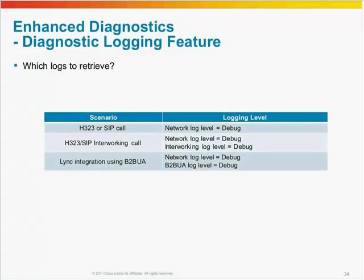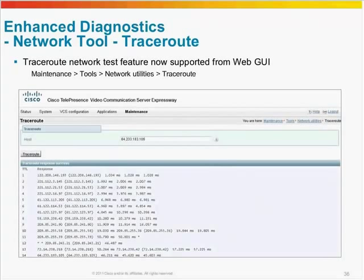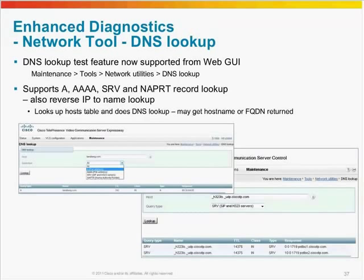Here you can see an example of a ping query, which will also list the response times. Here is a picture of the new traceroute page. And finally, a screenshot of the DNS lookup tool, which now supports address records for both IPv4 and IPv6, service location, and NAPTR record lookups.